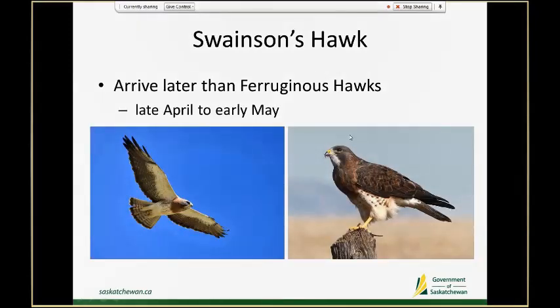When we contrast Ferruginous hawks to Swainson's hawks, the first thing to note is that Swainson's arrive a little bit later — they're migrating back from Argentina compared to Ferruginous hawks that are just coming from southern states and northern Mexico. We expect to usually see Swainson's hawks in late April to early May.